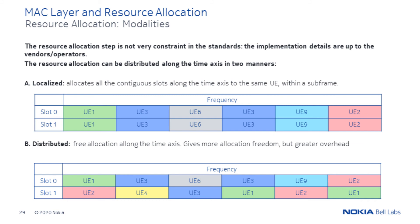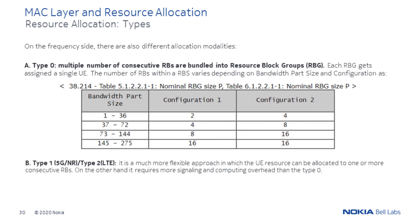On the time axis, the resource allocation can be distributed in two manners. The localized modality allocates all contiguous slots along the time axis within a sub-frame of one millisecond to the same UE. On the distributed mode, the allocation is free along the time axis, providing more flexible scheduling with much higher overhead. On the frequency side, there are also several ways of organizing the resources. If type 0 is selected, multiple consecutive resource blocks are bundled into so-called resource block groups, and all resource blocks within each group are assigned to the same UE. The number of resource blocks per group depends on the total number of resource blocks within the entire bandwidth. Type 1 configuration allows a much more flexible approach in which the UE resources can be allocated to one or more consecutive resource blocks, but it requires much more signaling overhead.